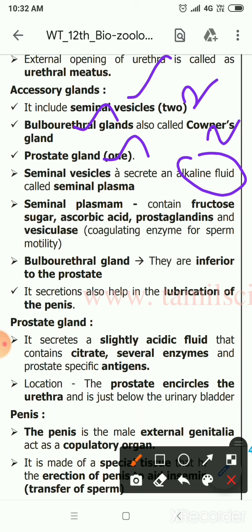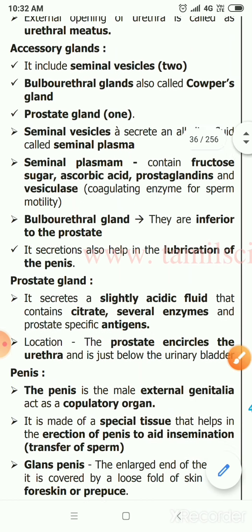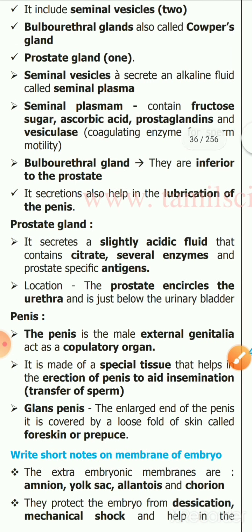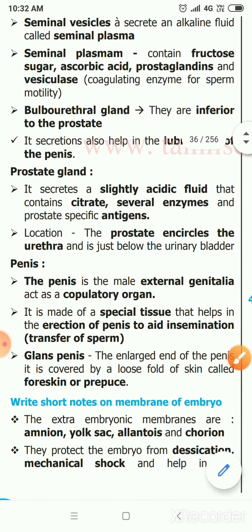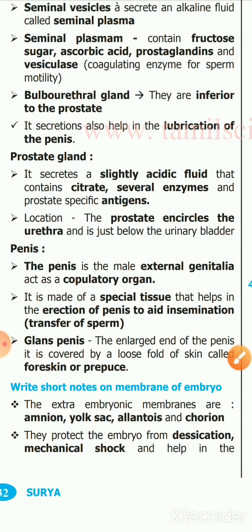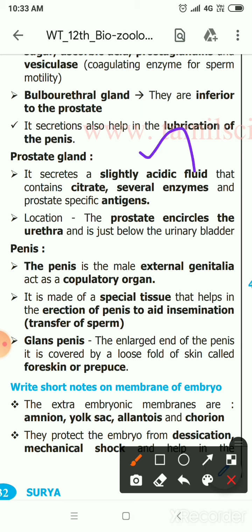Seminal plasma contains fructose sugar, ascorbic acid, and prostaglandins. The bulbourethral gland is helpful in lubrication of the penis. The prostate gland secretes a slightly acidic fluid containing citrate and several enzymes. The male reproductive diagram is very important, and you must label these three glands to earn full marks.